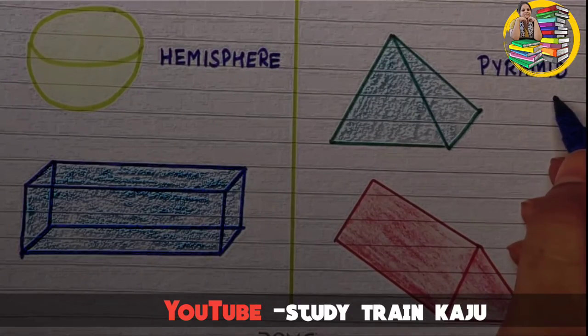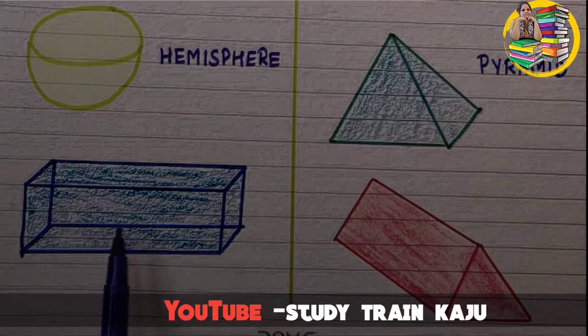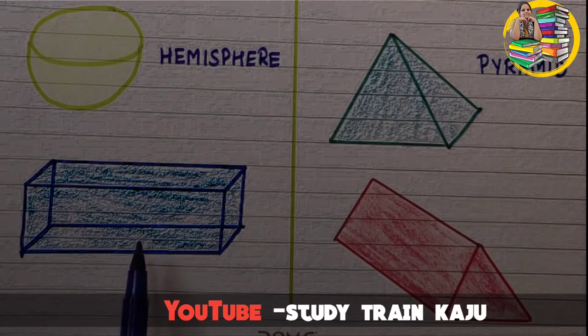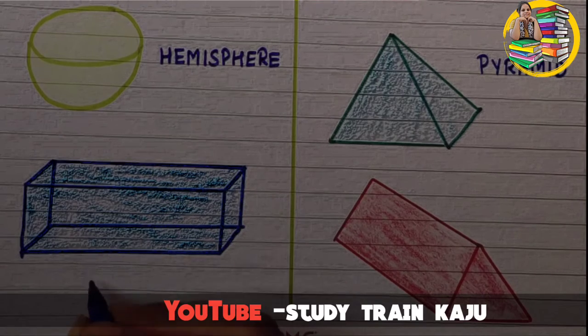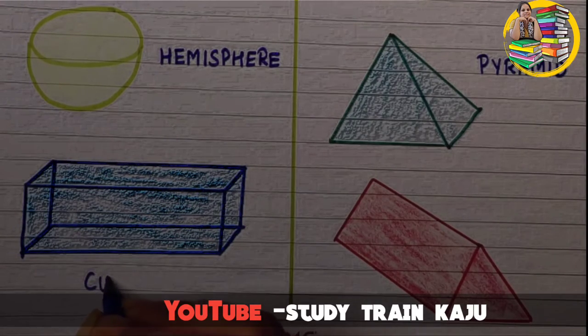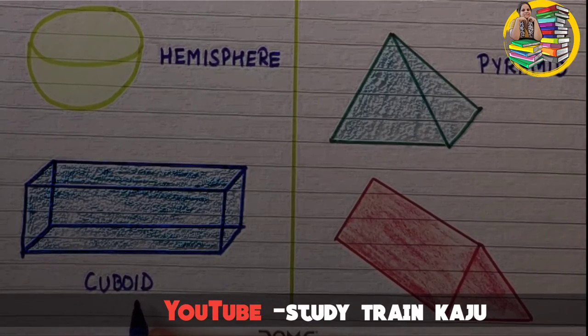The next shape is a rectangular three-dimensional structure. This is a cuboid. C-U-B-O-I-D. Cuboid.